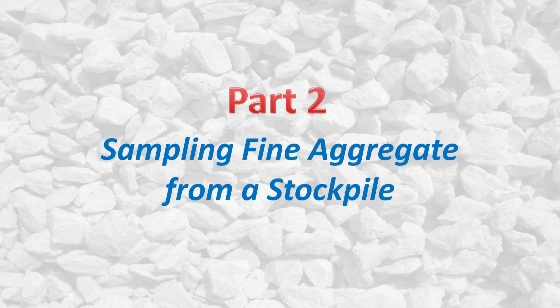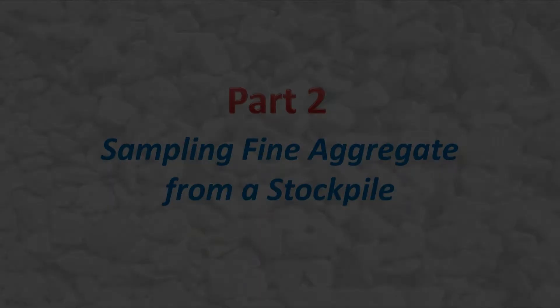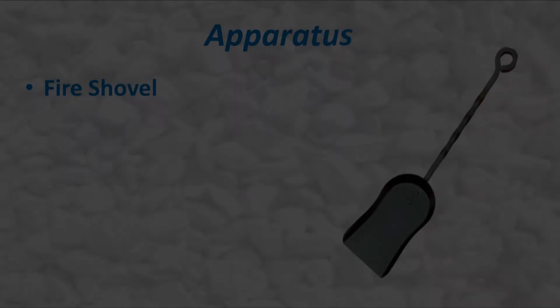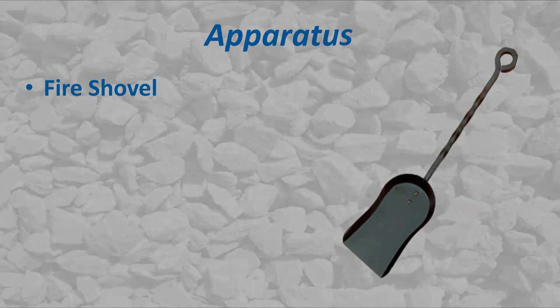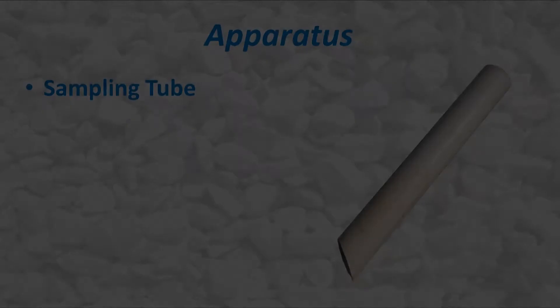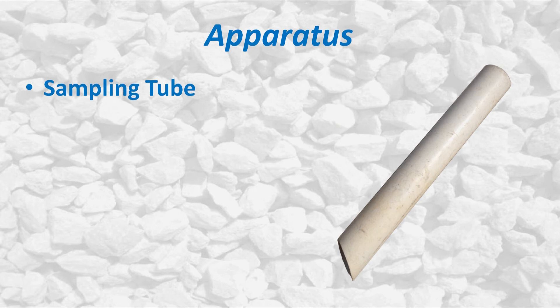Fine aggregates are sampled from stockpiles in much the same way as coarse aggregates. However, instead of the square bit shovel, either a fire shovel or a sampling tube is used to remove the material from the sample pile.